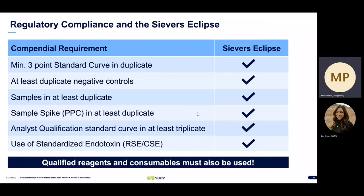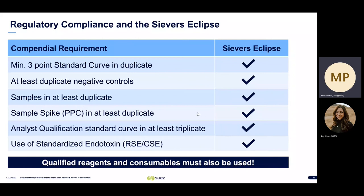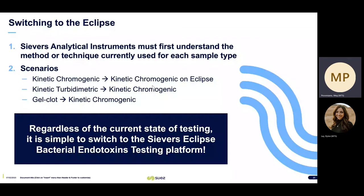Another consideration is to use qualified rubin consumables. When switching to the Eclipse, you must first understand the method for each sample type — some samples may be tested on kinetic chromogenic and others on kinetic turbidometric. Here are some scenarios on switching: the easiest is switching from a kinetic chromogenic method to kinetic chromogenic on the Eclipse because they both utilize a microplate reader. You can also switch from kinetic turbidometric to kinetic chromogenic, or regardless of the current state of testing, it is simple to switch to the Severs Eclipse bacterial endotoxin testing platform.